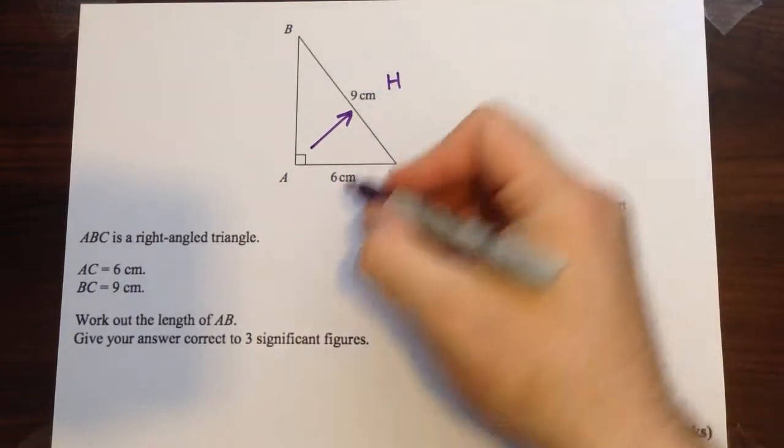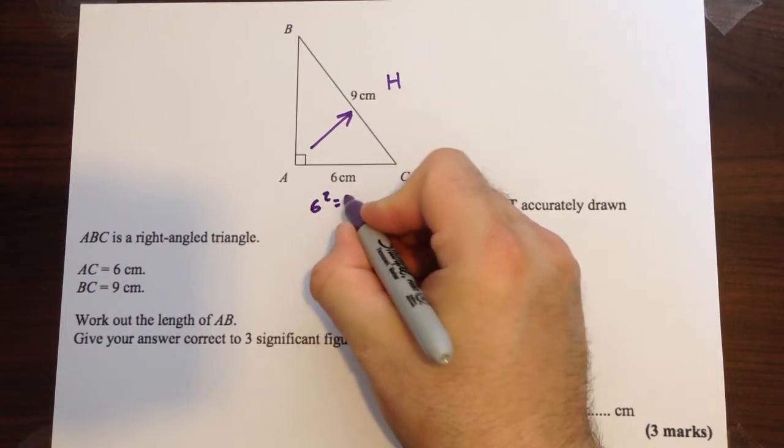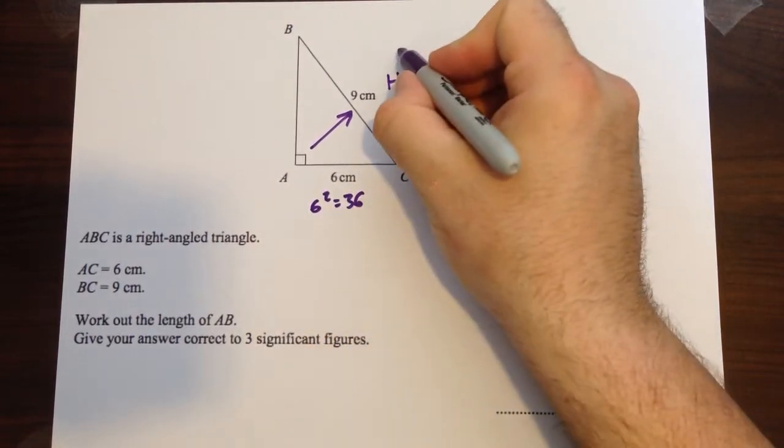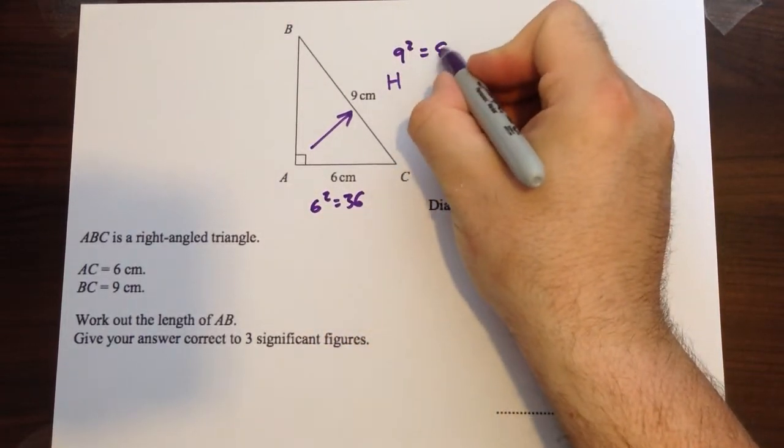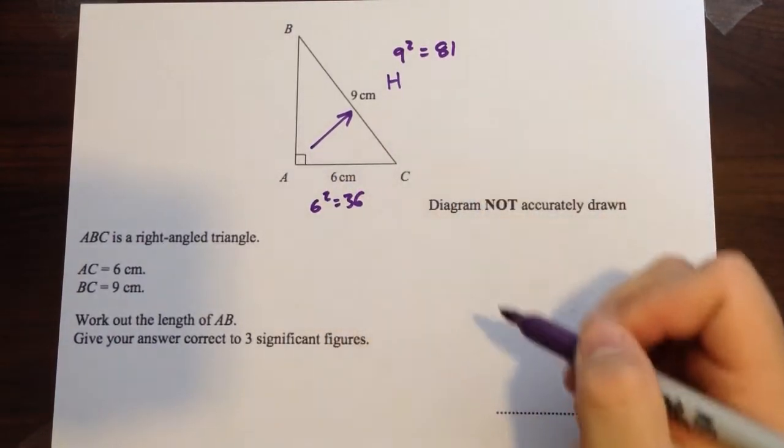So, we're going to square both sides as usual, so 6 squared is 36, 9 squared is 81, and we're going to have to subtract them now.